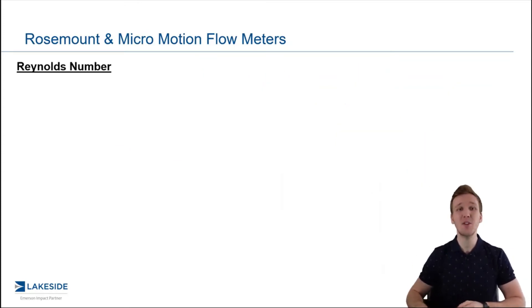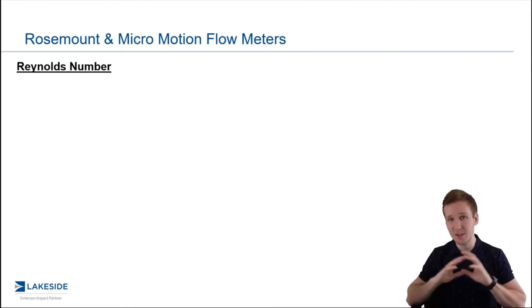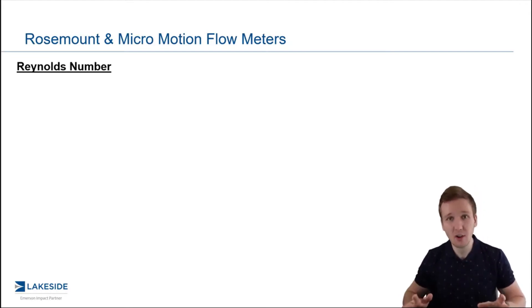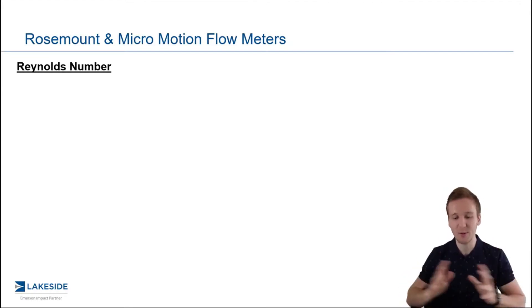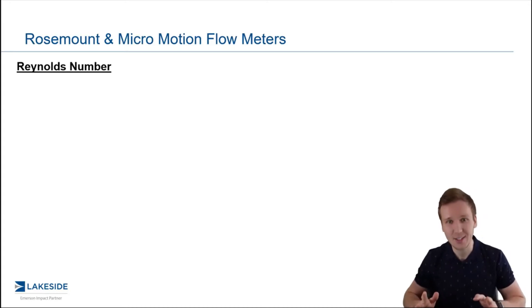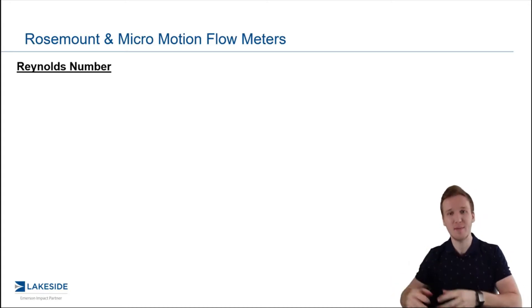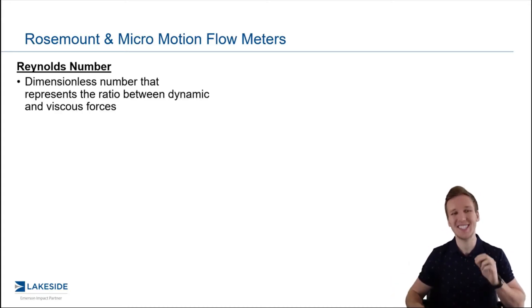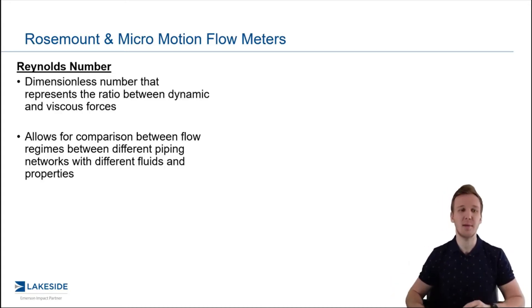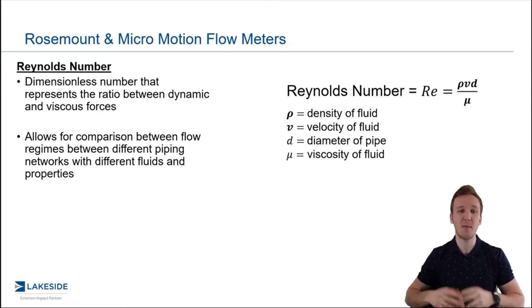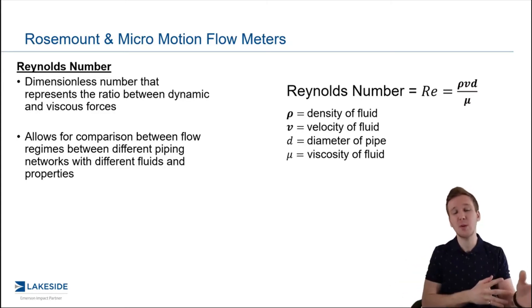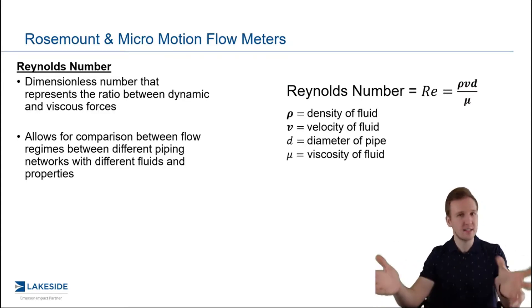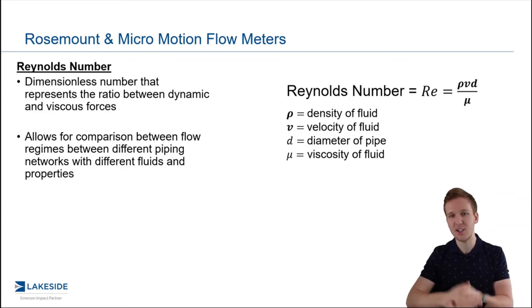Today we're introducing something known as the Reynolds number. And if you learned about this at all in school, it might bring back some terrible memories — but trust me, we're not going to dive into too much of the math behind it. Just understand that this is a dimensionless number, and this number really is a ratio between those dynamic and viscous forces. That's the formal definition.